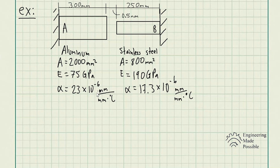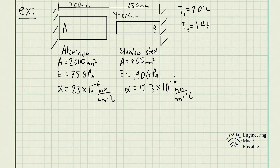You can think of the thermal expansion coefficient kind of like strain — it's a somewhat unusual unit but you'll get used to using it. Rod B is stainless steel; we have the cross-sectional area, modulus of elasticity, and coefficient of thermal expansion. T1, the original temperature, is 20 degrees Celsius and T2, as the problem states, goes up to 140 degrees Celsius. Part A asks for the stress in the aluminum rod and Part B asks for the change in length of the aluminum rod.